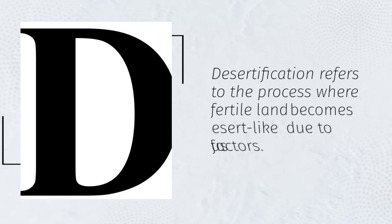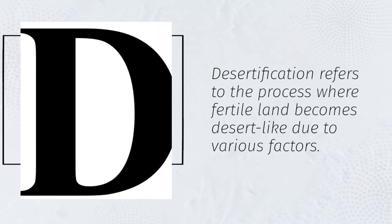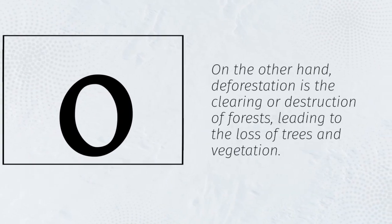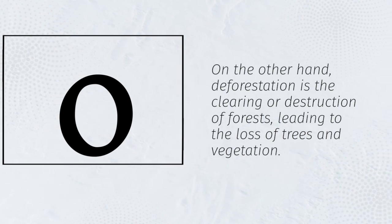Desertification refers to the process where fertile land becomes desert-like due to various factors. On the other hand, deforestation is the clearing or destruction of forests, leading to the loss of trees and vegetation.